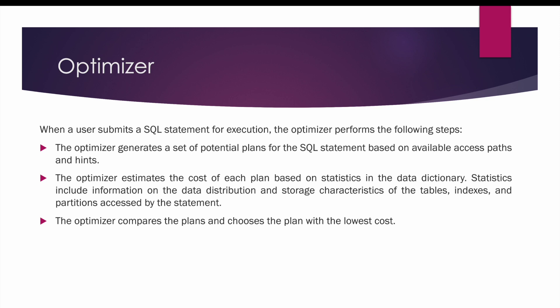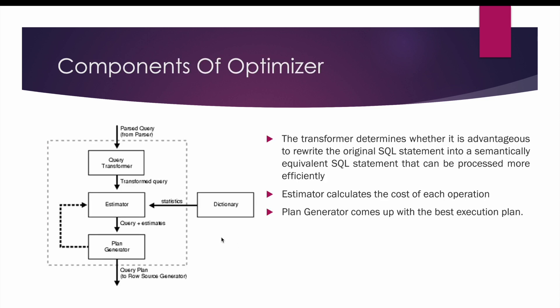With the help of these statistics, the optimizer compares plans based on cost, and whichever plan has the least cost, that plan will be picked up. This is the diagrammatic representation of an optimizer. When the user submits the SQL query, it is first passed to the transformer. The query transformer determines whether it is advantageous to rewrite the original SQL statement into a semantically equivalent SQL statement that can be processed more efficiently — for example, rewriting queries that have multiple subqueries.